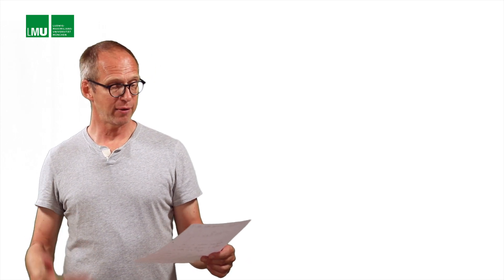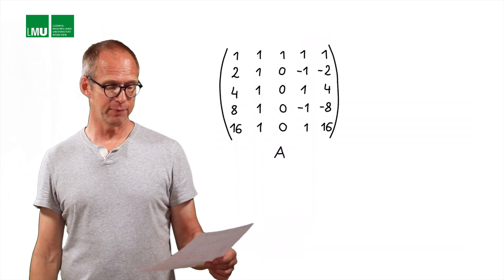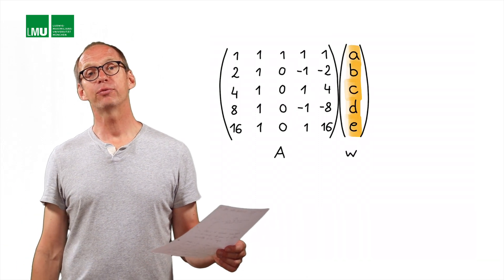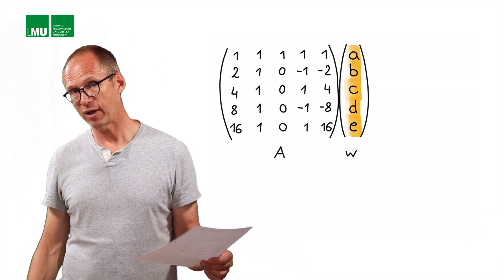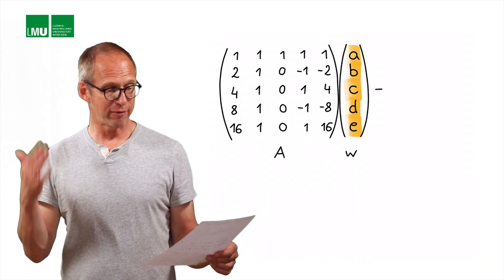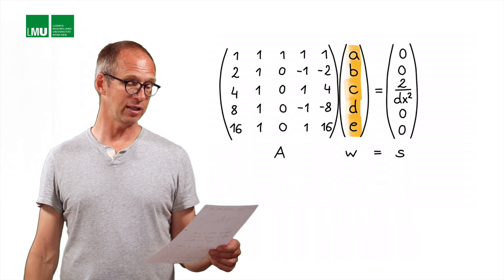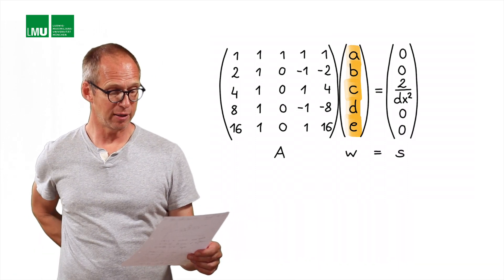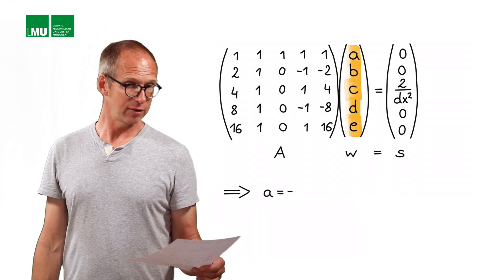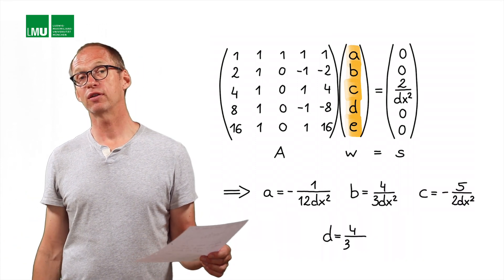Here we have our system matrix A multiplying our coefficient vector w. On the right-hand side, if we want to approximate the weights for a second derivative, we will have a vector of 0, 0, 2 over dx squared, 0, 0, which you can easily derive using these Taylor expansions. The solution, after matrix inversion, is shown here for all coefficients.